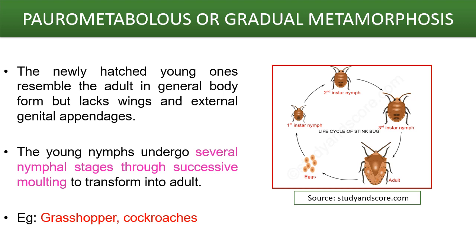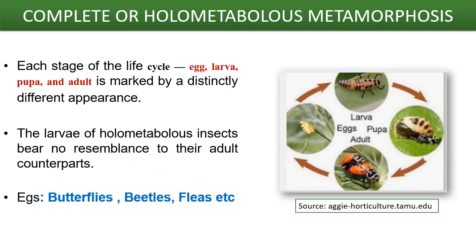Now, the paurometabolous or gradual metamorphosis. In this metamorphosis, the newly hatched young ones resemble the adult in general body form but lack wings and external genital appendages. The young nymphs undergo several nymphal stages through successive molting to transform into an adult. In holometabolous metamorphosis, each stage of the life cycle is divided into four different stages: the egg stage, the larva stage, the pupa stage, and the adult stage, which is markedly distinct by a different appearance. The larvae of holometabolous insects bear no resemblance to their adult counterparts — they are totally different. Their habitat and food sources also may be entirely different from the adults as well.